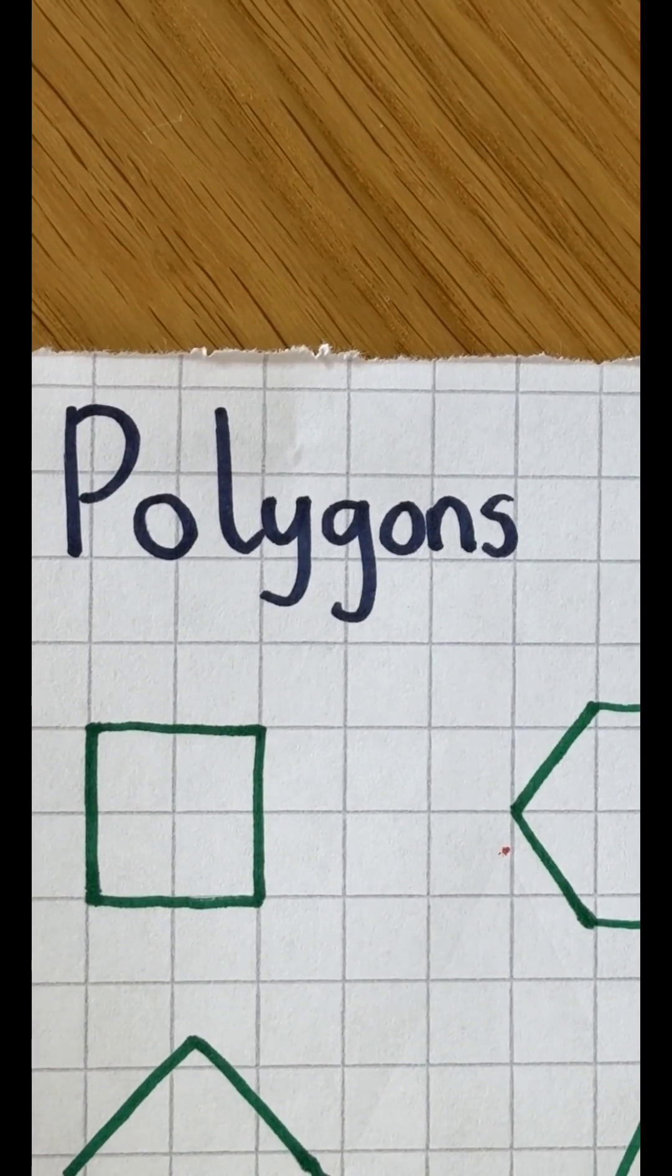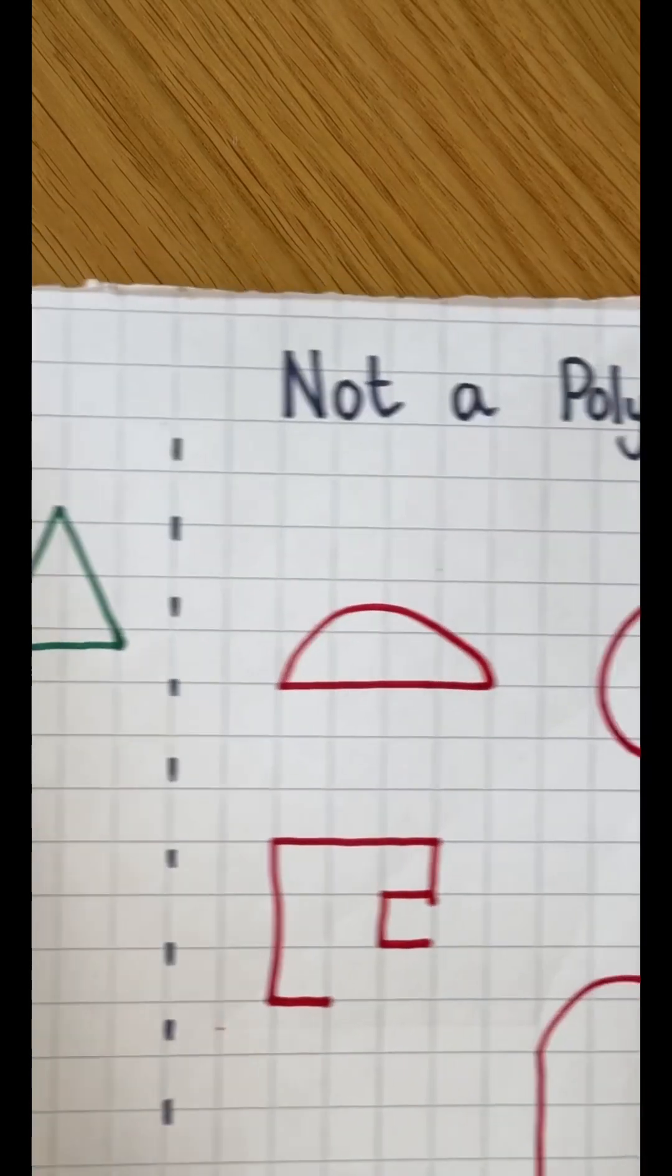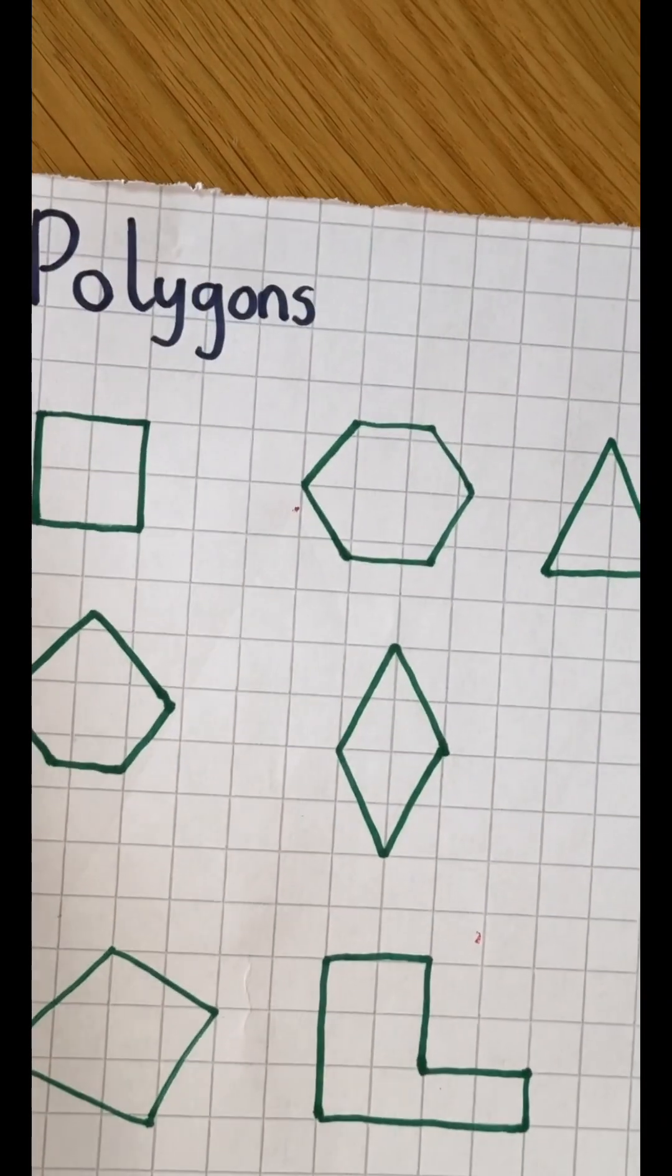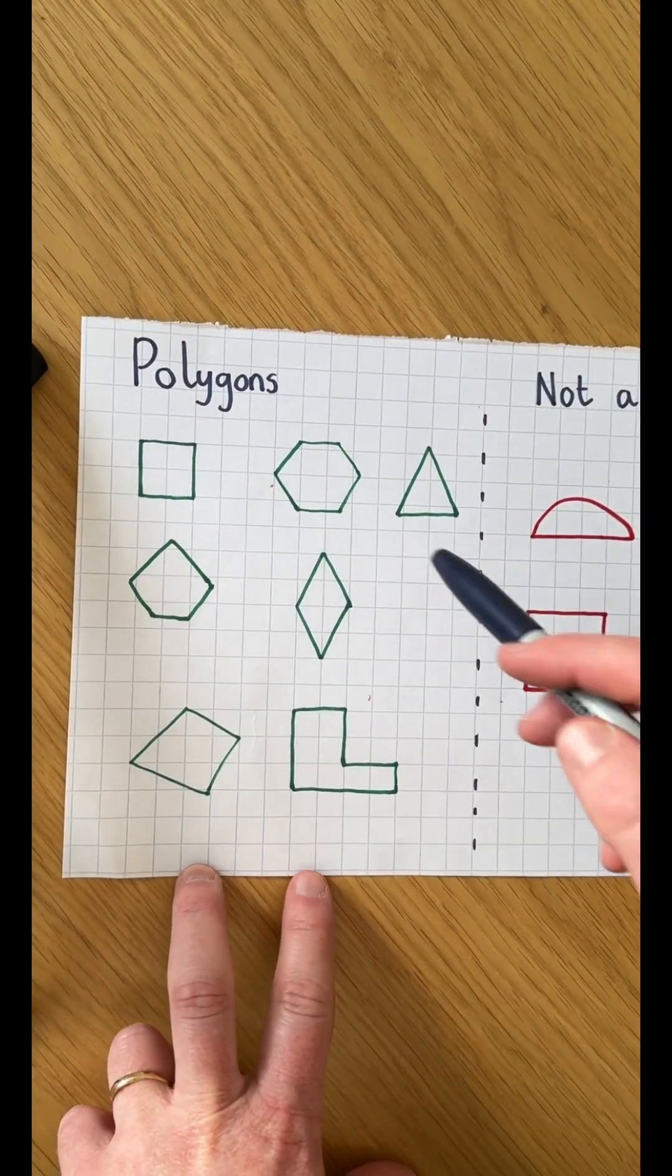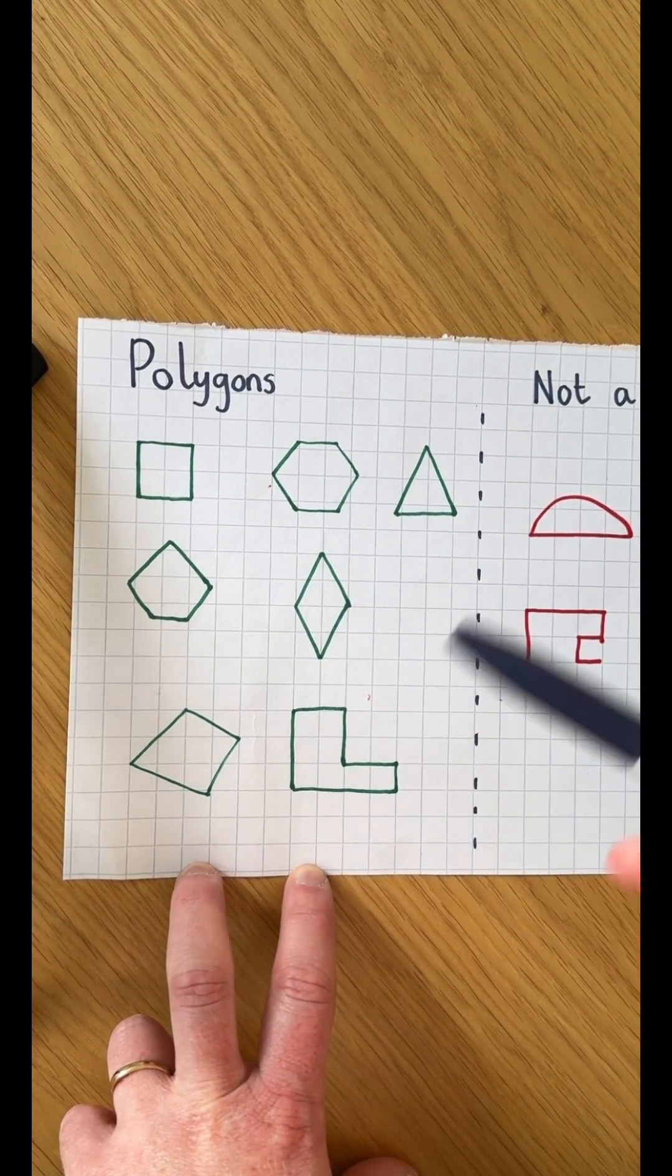What is a polygon? All shapes are either polygons or not a polygon. Polygons are shapes that have only straight sides.